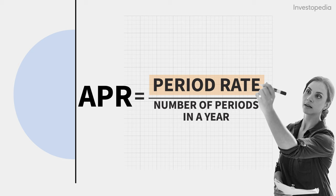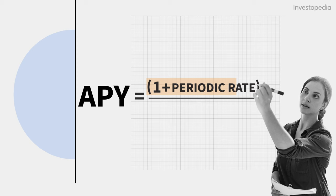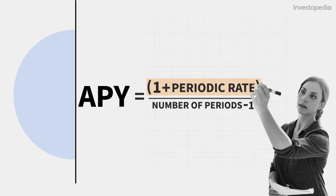APR is calculated by multiplying the periodic interest rate by the number of periods in a year in which that rate is applied. APY is calculated by adding 1 plus the periodic rate as a decimal, then multiplying it by the number of periods and subtracting 1.